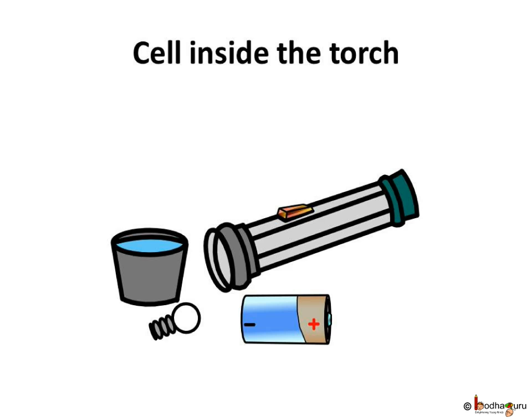Now, where does the torch get energy from? You know it runs on electricity. But from where does the torch get that electricity? I know, you all will say it's from the cell inside it. And that's correct.